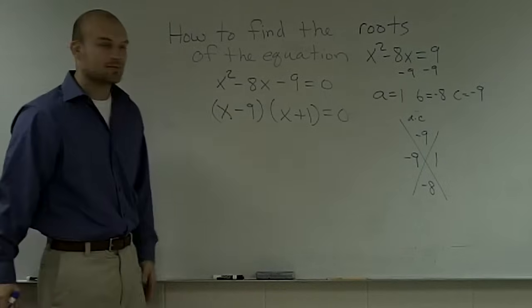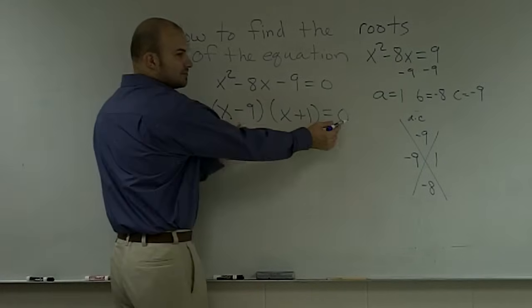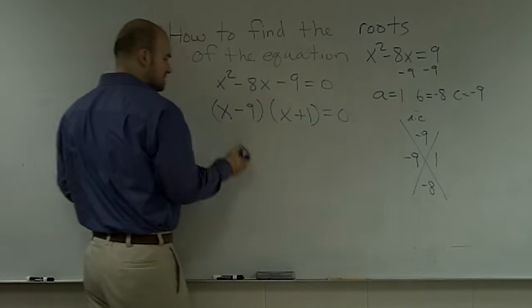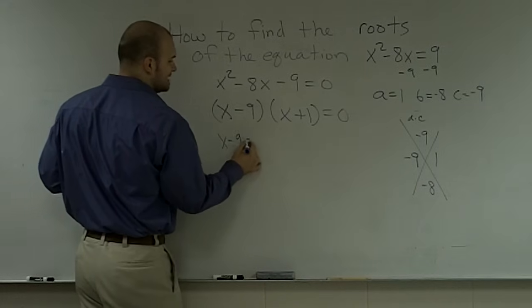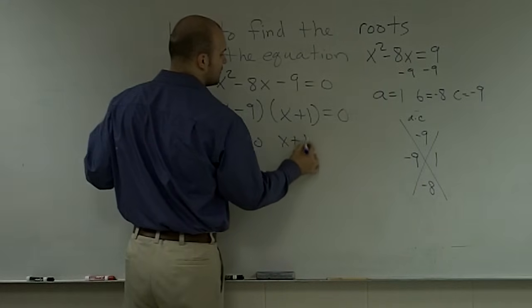Now, using the zero product property, I know that this binomial equals 0 and this binomial equals 0. So therefore, I say x minus 9 equals 0 and x plus 1 equals 0.